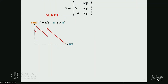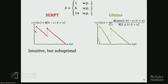SERPT is a very nice idea — a natural generalization of SRPT. But it turns out it's not optimal, which you'd guess from the Gittins index giving the optimal solution. The Gittins index is a bit more complicated than SERPT but has a very similar intuition behind it with some fancier details.